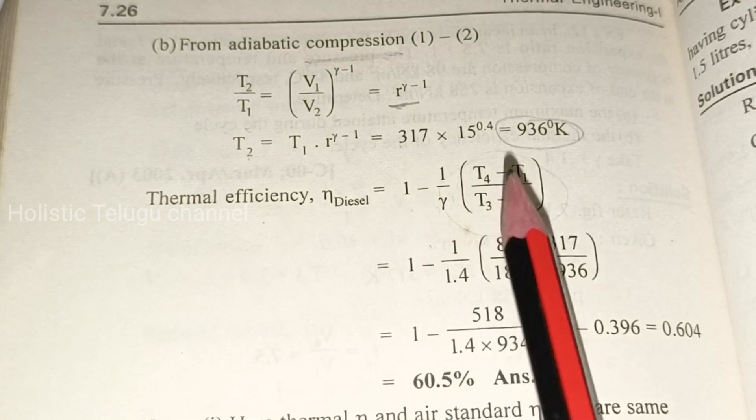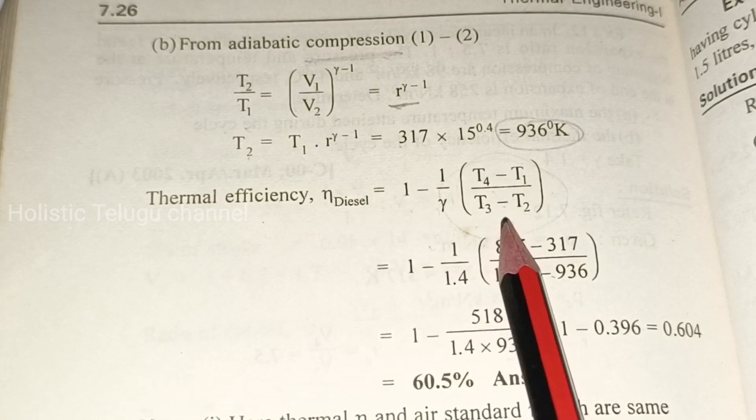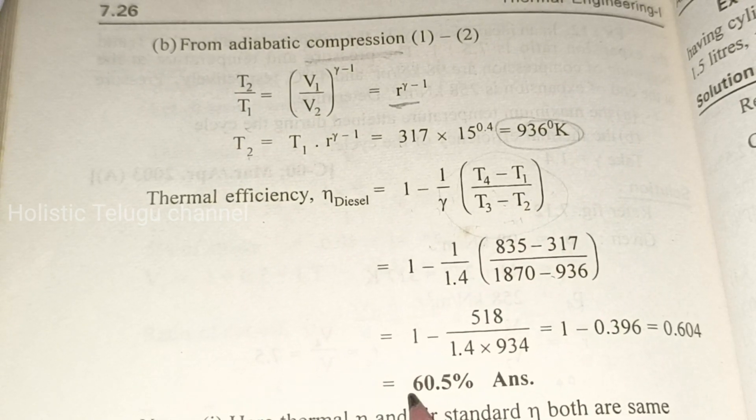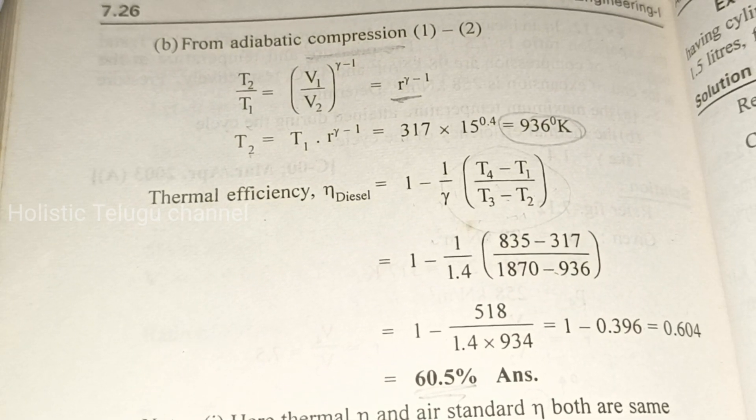Thermal efficiency: η = 1 - (1/γ) × [(T4 - T1)/(T3 - T2)] = 1 - (1/1.4) × [(835 - 317)/(1870 - 936)] = 60.5%.